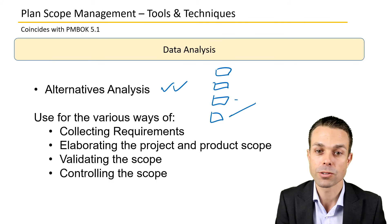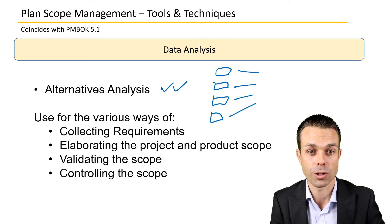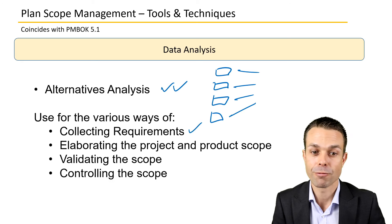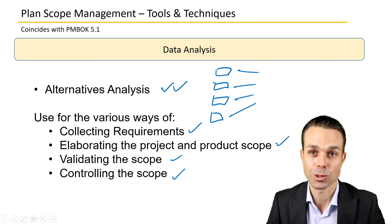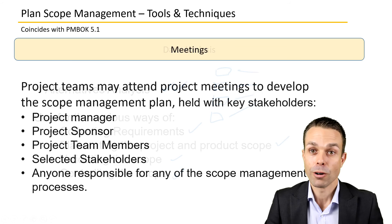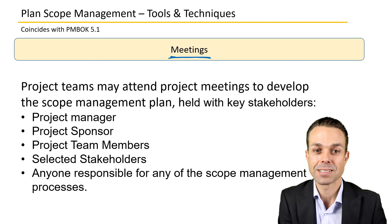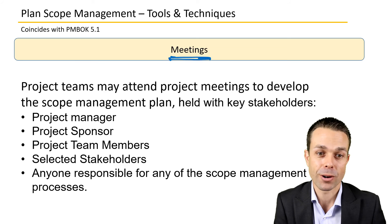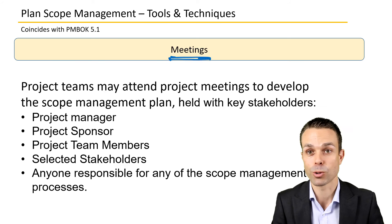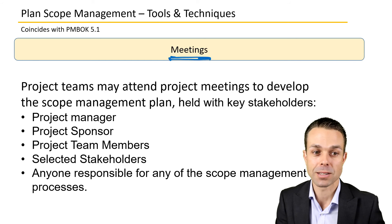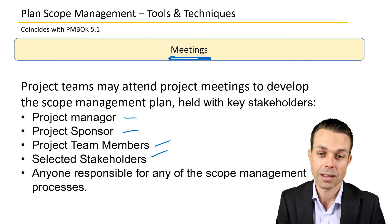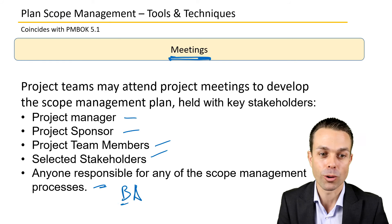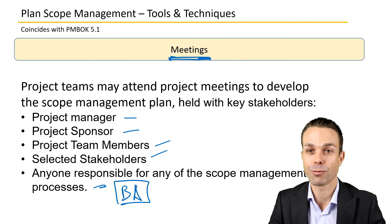Data analysis will come into play as there'll be alternatives to choose from — various ways of collecting requirements, validating the scope, controlling the scope, or elaborating the project and product scope. You'll need to analyze those and choose the best one for your project. Meetings are one of the fastest ways to get answers and gather requirements. Project teams may attend meetings with key stakeholders such as the project manager, sponsor, team members, selected stakeholders, and anyone responsible for scope management processes like the business analyst.